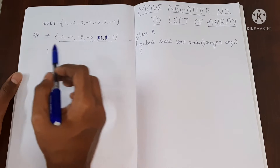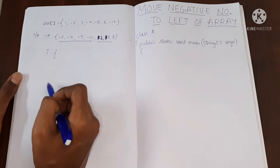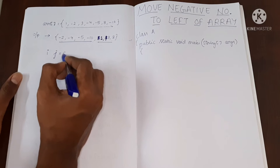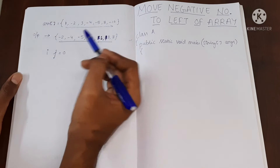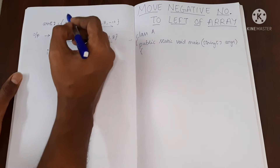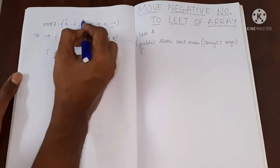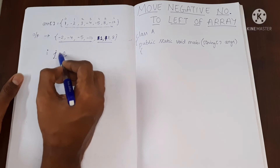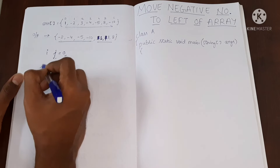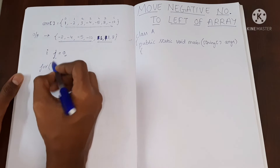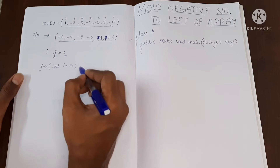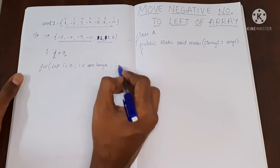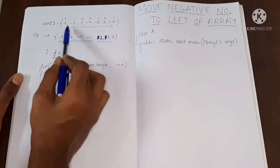So let's move to the logic. In this case I'm going to use two variables: I and J. I will be used to traverse through the array, and J will be initially zero — pointing to the element at index zero. So initially J will be zero and I will be used to traverse the array. We'll write a for loop: int i = 0, i less than array dot length, i plus plus.